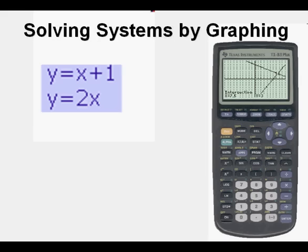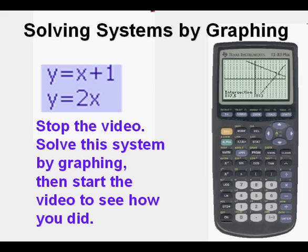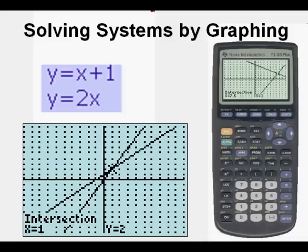Now, what we would like you to do at this point is have you stop the video and solve the system by graphing. Then start the video again to see how you did. Okay, you should have the intersection of x equals 1, y equals 2. So if you did that, we assume that you did everything right.